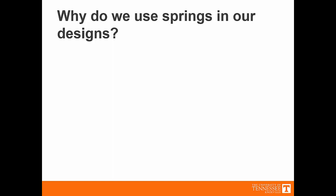The first one, and maybe the most obvious, is that we use springs to oppose displacement. We create our springs in such a way so that it produces a force that resists that displacement. The force created by the spring is equal to a spring constant times the amount of displacement the spring has undergone.